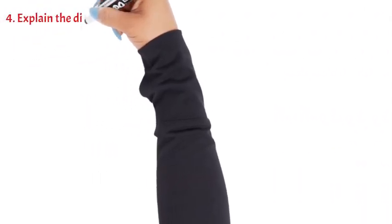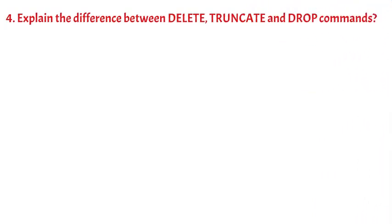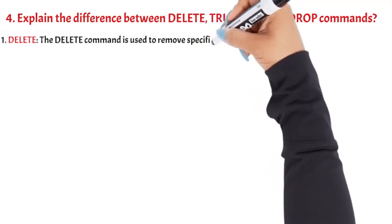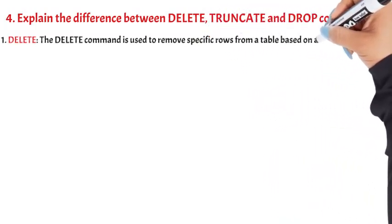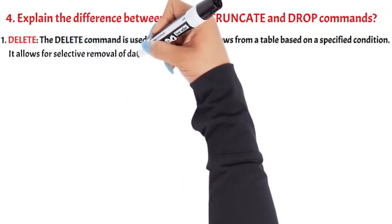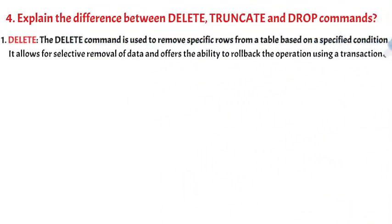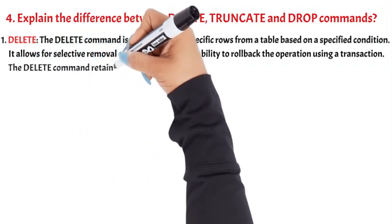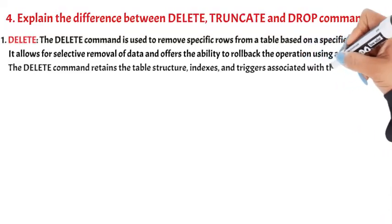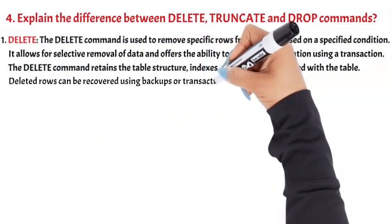Question 4: Explain the difference between Delete, Truncate, and Drop commands. 1. Delete. The Delete command is used to remove specific rows from a table based on a specified condition. It allows for selective removal of data and offers the ability to roll back the operation using a transaction. The Delete command retains the table structure, indexes, and triggers associated with the table. Deleted rows can be recovered using backups or transaction logs.